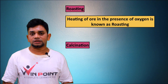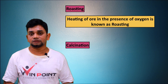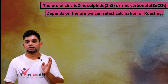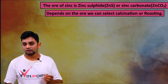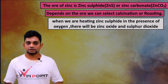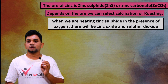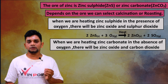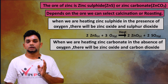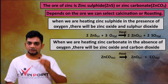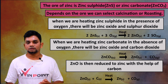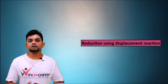To summarize the extraction of zinc: roasting is the process of heating an ore in the presence of oxygen; calcination is the process of heating an ore in the absence of oxygen. If the ore is zinc sulfide, the method is roasting: 2ZnS + 3O₂ → 2ZnO + 2SO₂. If the ore is zinc carbonate, the method is calcination: ZnCO₃ → ZnO + CO₂. Then zinc oxide is reduced using carbon: ZnO + C → Zn + CO.